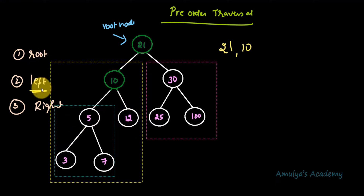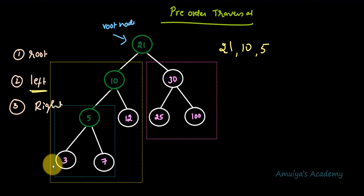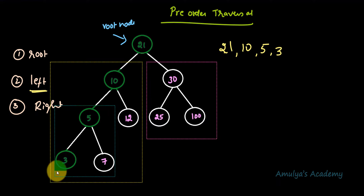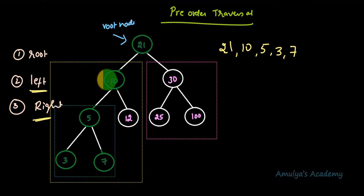After visiting root node 10, I visit its left subtree. Within that left subtree we follow the same rule — start from root, then left, then right. So the root here is 5. Next I visit its left subtree; its root is a leaf node with no children, so I write that down. Then I visit the right subtree: 7. Now left subtree of 10 is done, so next is the right subtree of 10: 12.